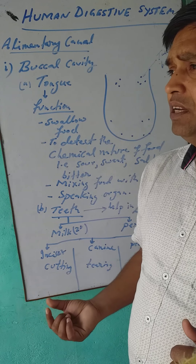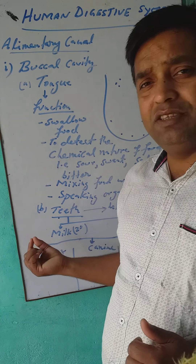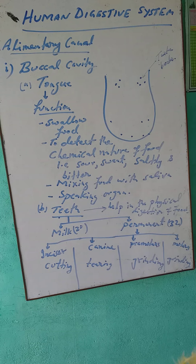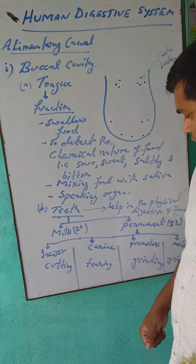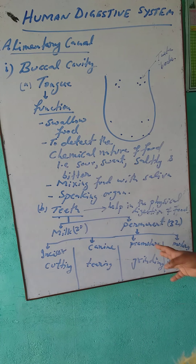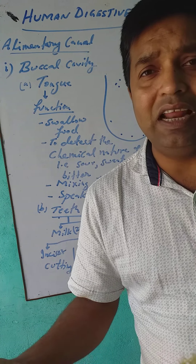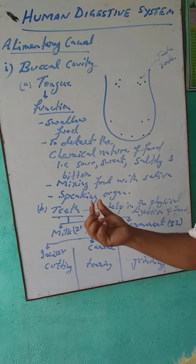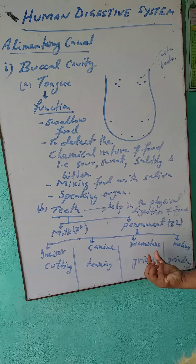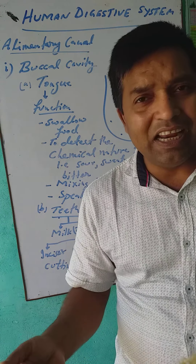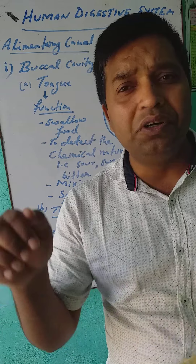After losing the milk teeth, another kind of teeth appear in our mouth. They are permanent — called permanent teeth — and they are 32 in number. There are four categories and four types of teeth in our mouth: incisor, canine, premolar, and molar. Incisors help us to cut the food.